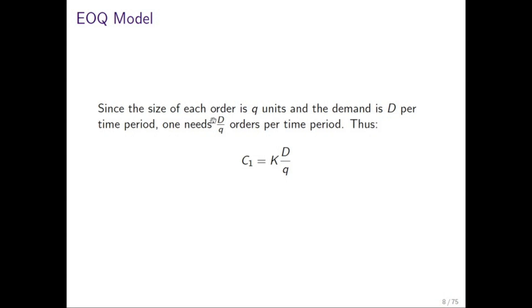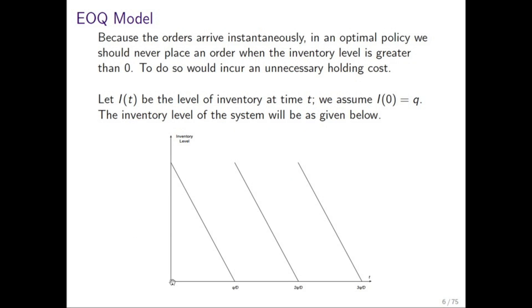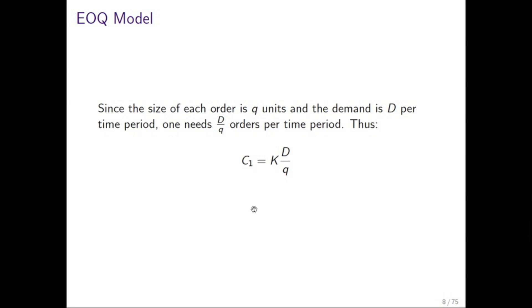So we know that every Q over D time periods, we're going to need to order. So every Q over D time periods, we're going to incur a cost K. So the cost per time period of ordering is K divided by Q over D, so it's K multiplied by D over Q. That's the first cost component.